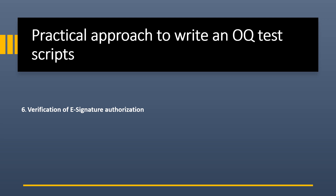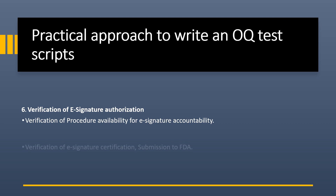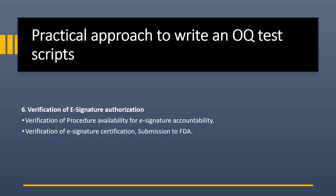Sixth is verification of electronic signature authorization. This includes: verification of procedure availability for electronic signature accountability; verification that the electronic signature certification has been submitted to the FDA stating the intent of using electronic signatures; and verification that electronic signatures appear in electronic reports showing who performed, reviewed, and approved the data.